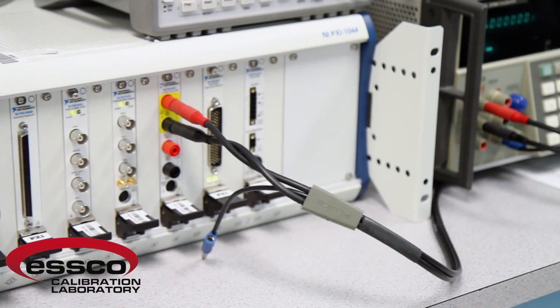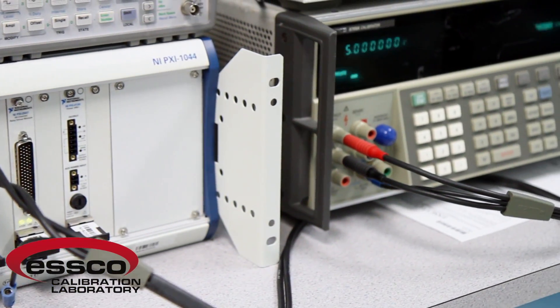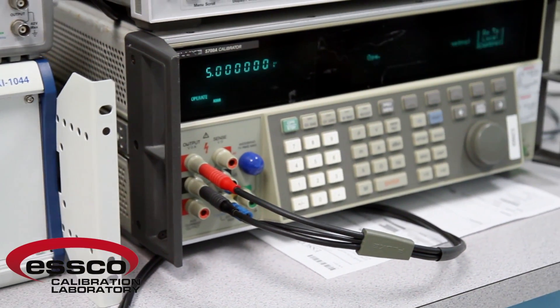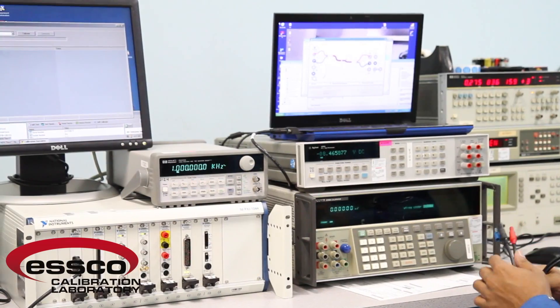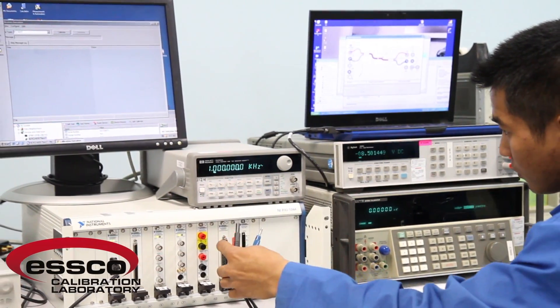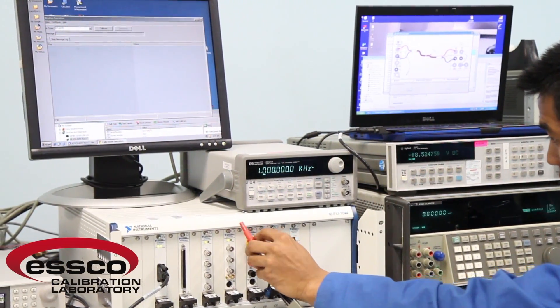Whether we're calibrating your National Instruments equipment in our lab or onsite at your facility, we utilize the NI Calibration Executive software. This program allows us to automate the calibration and adjustment procedure for most NI instruments.